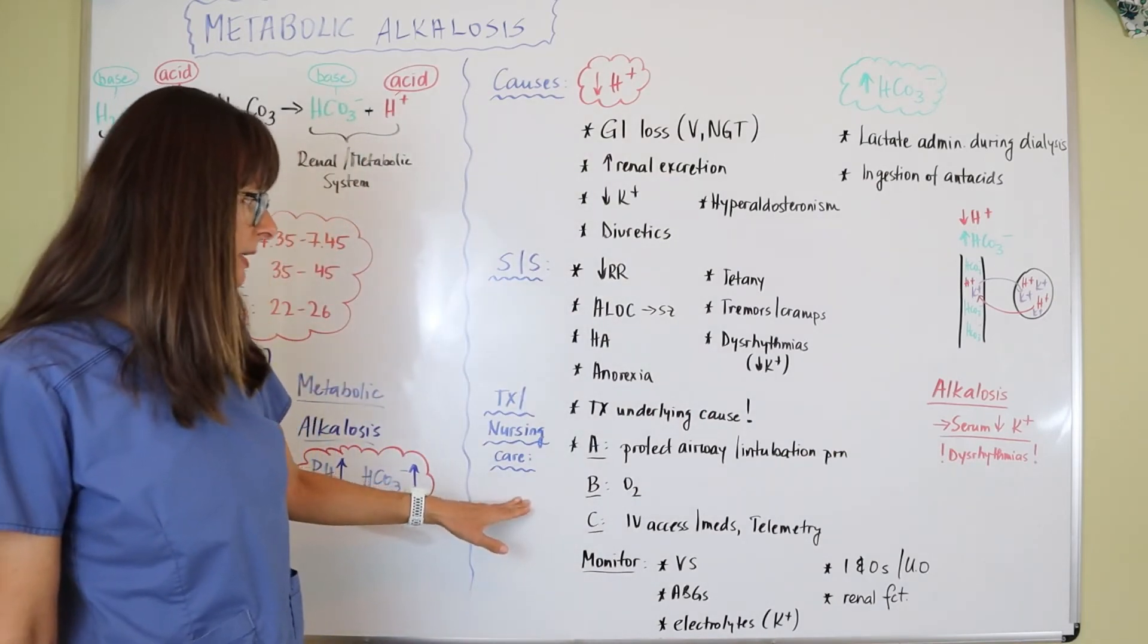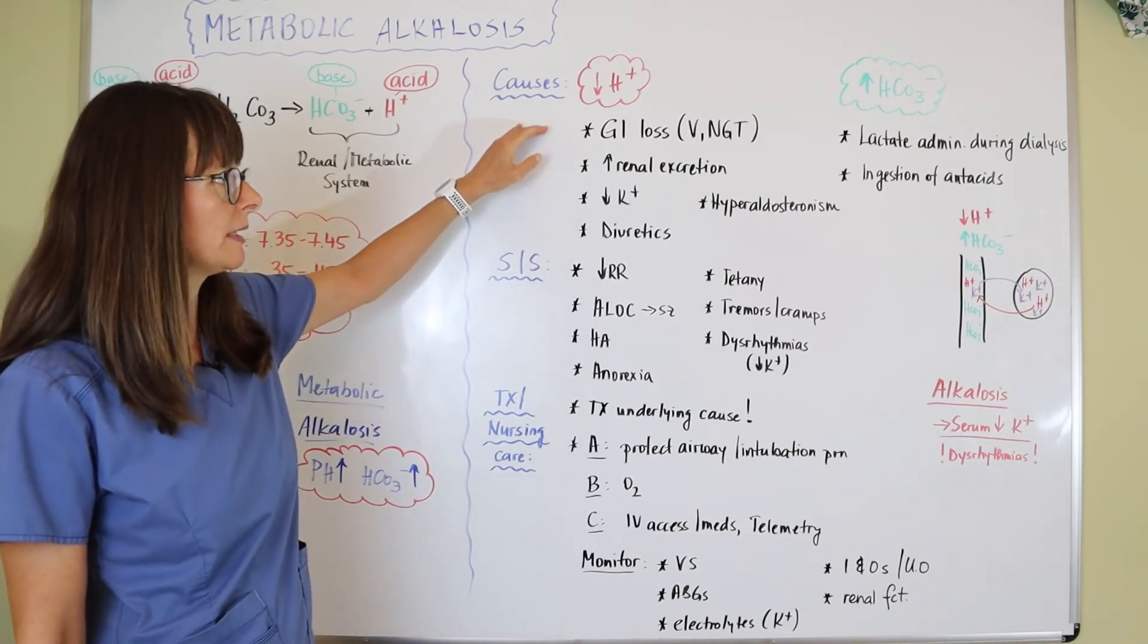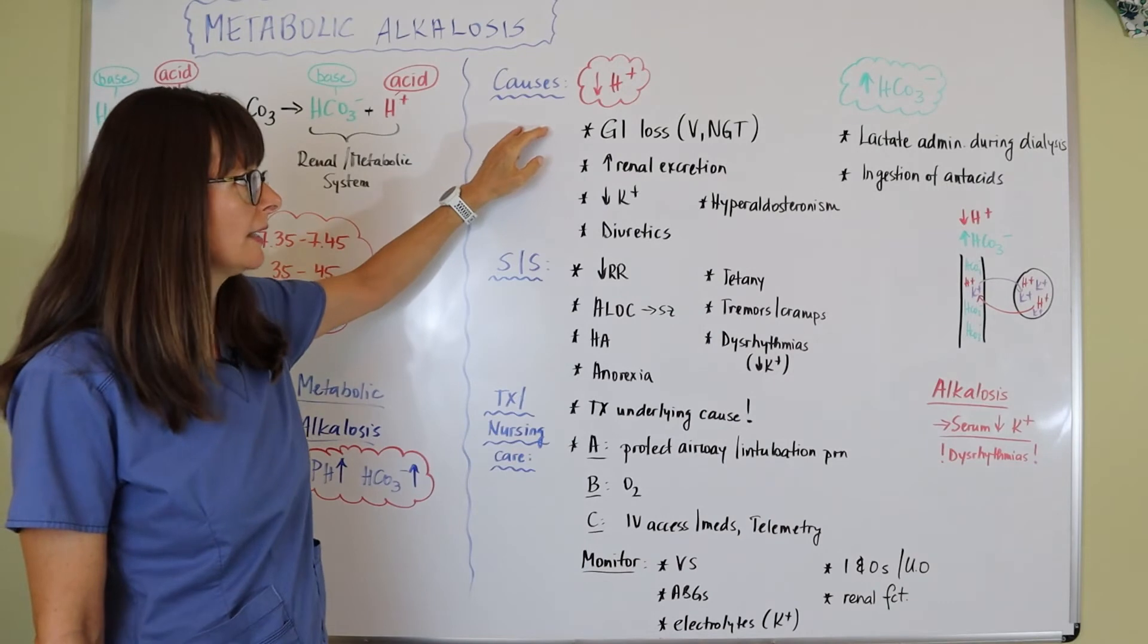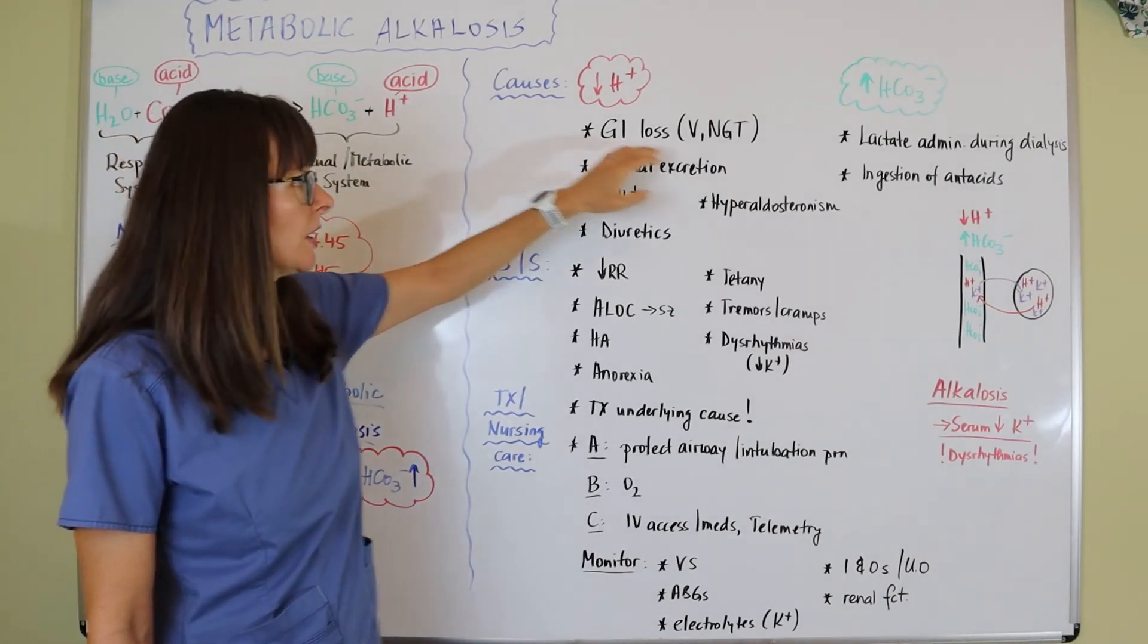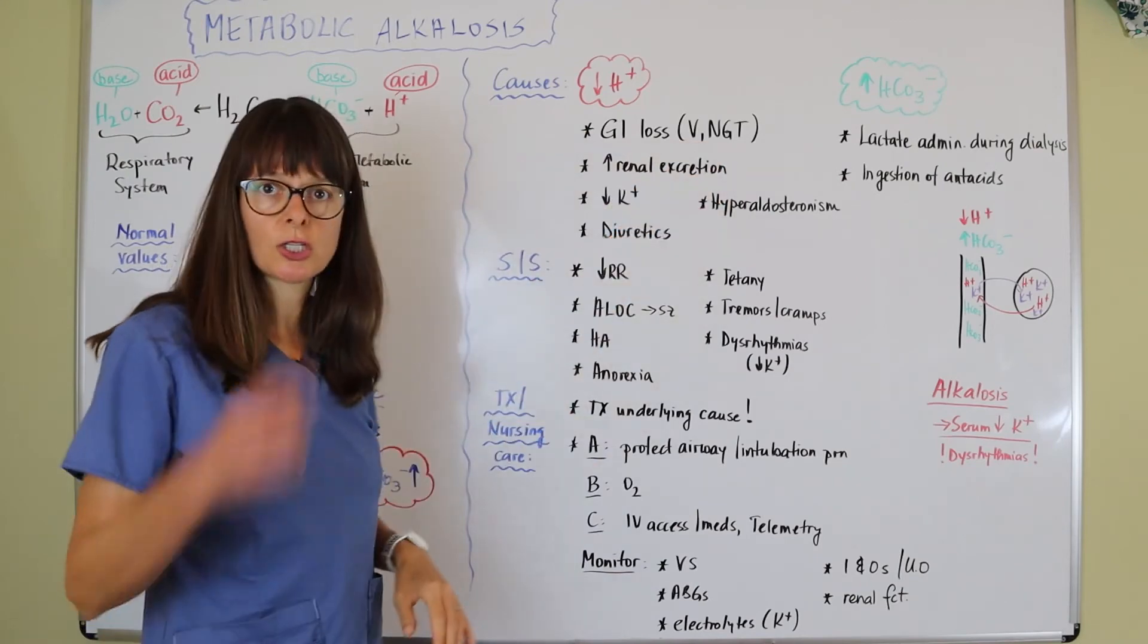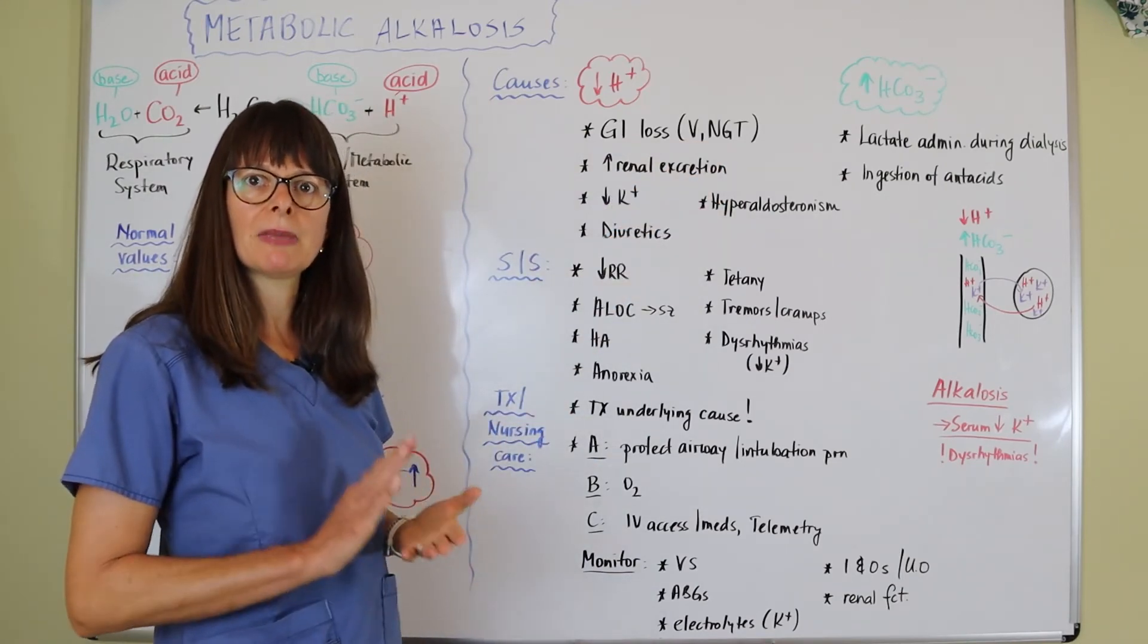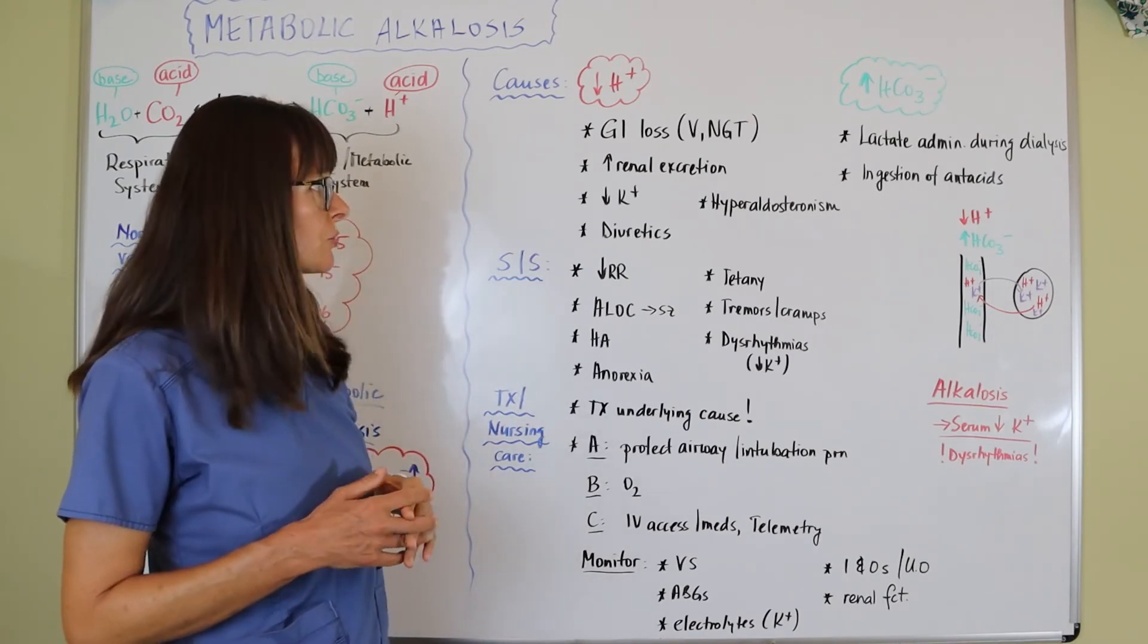For nursing care and treatment, we want to treat the underlying cause. If the patient is vomiting, most likely they're dehydrated, so they'll need IV fluids and antiemetics to stop the vomiting. If the cause is NG tube suctioning, maybe the suctioning is not functioning properly or needs to be paused. It all depends on the specific patient care scenario.